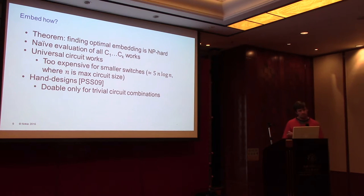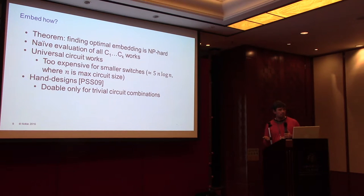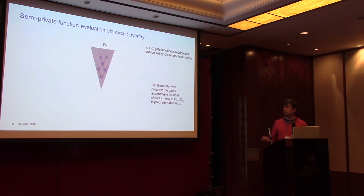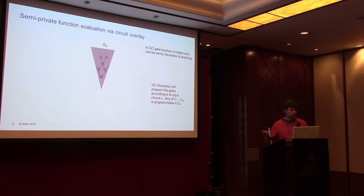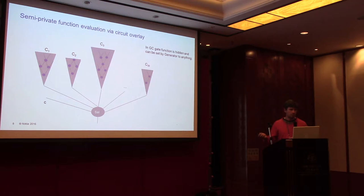The next question is how this embedding can be done. We have a theorem saying that finding the optimal embedding for a given set of circuits is not simple — it's actually NP-hard. So what can we do? Of course, naively we can do what I showed before — evaluate all circuits with a selection function. That's one way, and that circuit is universal for this set of circuits. But we want to do better. Another way is to use a universal circuit, which is getting more attention recently.